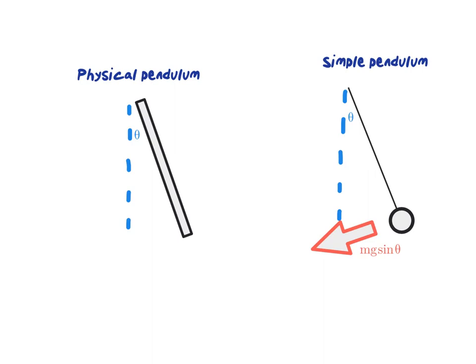The only difference is that for the physical pendulum, because we have a distributed mass, the force acts at the center of mass. Here I picked a uniformly dense rod, so its geometric center is the same as its center of mass, and therefore the force mg sine theta would just be applied right there at the midpoint.